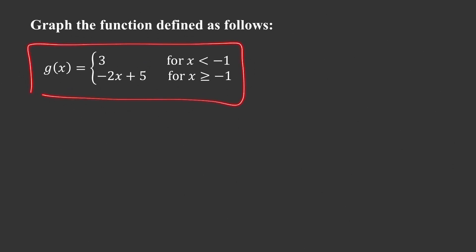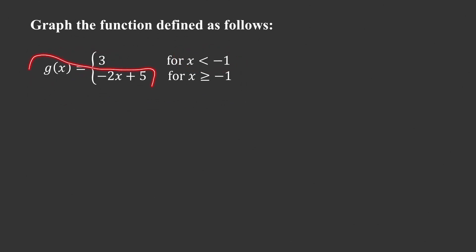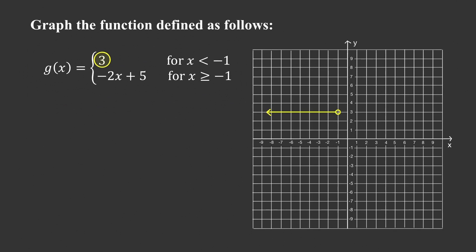In our first example, we have two formulas for g. The function g is constant, equal to 3 when x is less than negative 1, and it is a linear function — g of x equals negative 2x plus 5 — when x is greater than or equal to negative 1.